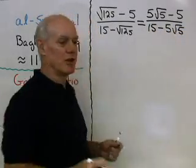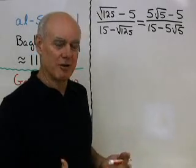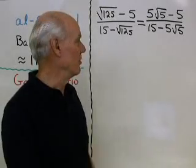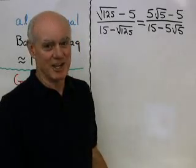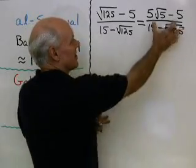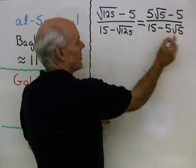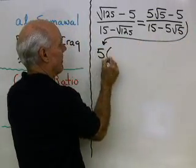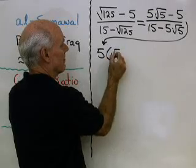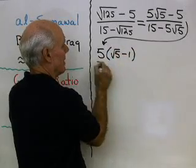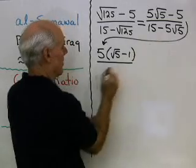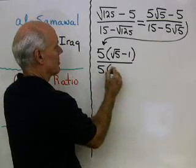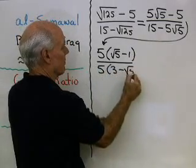So I'm just going to continue to simplify this expression until I get down to something that looks like this golden ratio or be able to show that it's not the golden ratio. I have a 5 common to the numerator and denominator. So let's take this over here. I'll factor out a 5 from the numerator. I get square root 5 minus 1. I'll factor out a 5 from the denominator and I'll have 5 times 3 minus square root 5.